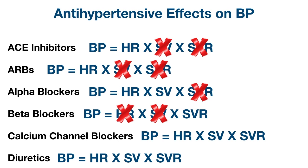Calcium channel blockers lower blood pressure primarily by blocking calcium channels on blood vessels, particularly the dihydropyridines. This decreases vascular smooth muscle contraction, vasoconstriction, and systemic vascular resistance. Non-dihydropyridines predominantly act on calcium channels of cardiac muscle cells and, although used more for tachydysrhythmias, can also decrease blood pressure by decreasing heart rate and stroke volume from decreased cardiac contraction.